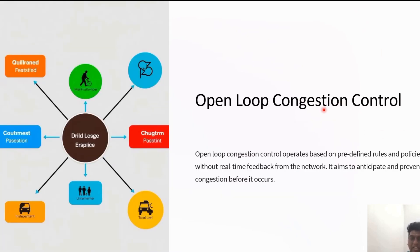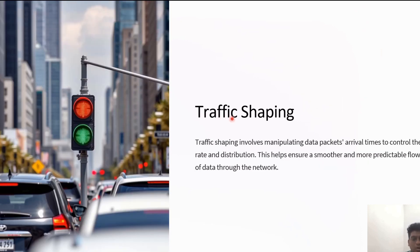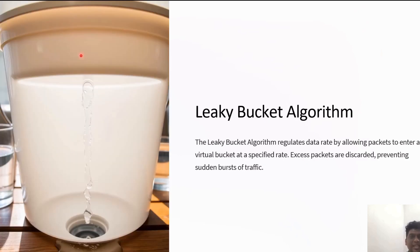In open loop congestion control, it is mainly based on predefined rules and policies without real-time feedback from the network. It helps to anticipate and prevent congestion before it happens by shaping network traffic and manipulating the arrival times of data packets to control their rate and distribution, which helps in a smooth data rate throughout the network. The leaky bucket algorithm is a traffic shaping solution categorized as an open loop approach.